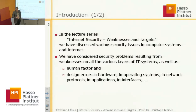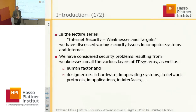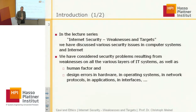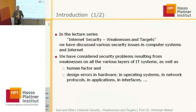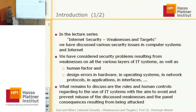We discussed security issues resulting from weaknesses on all levels of interconnected IT systems — human factors, design errors in hardware, software, operating systems, network protocols, applications, interfaces, and others. The question is: if there are mistakes and errors, is it allowed to misuse them? Or is this forbidden? And when it is forbidden, why is it forbidden? This is what we want to discuss today in the last lecture of our internet security series.